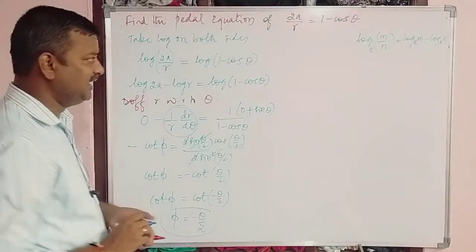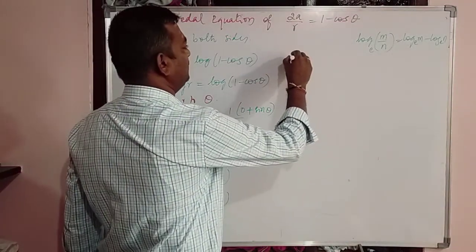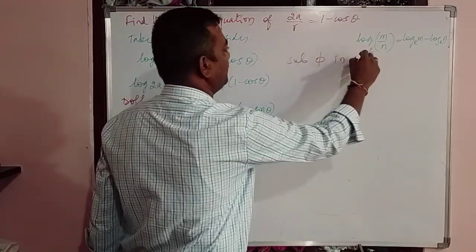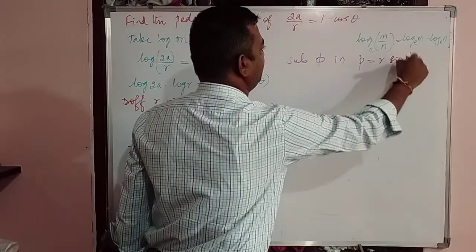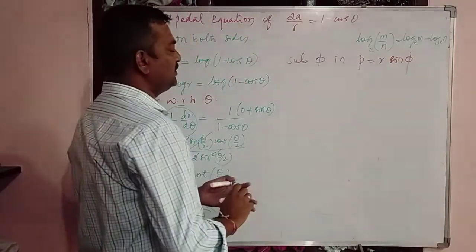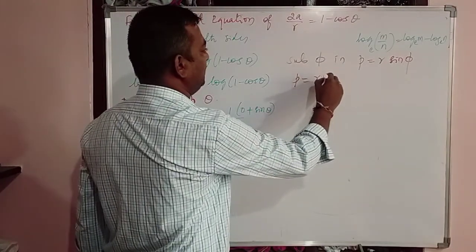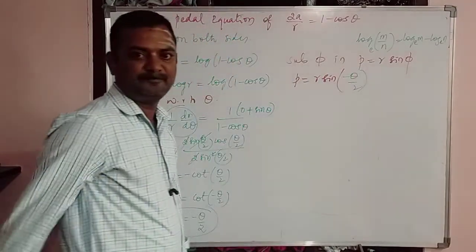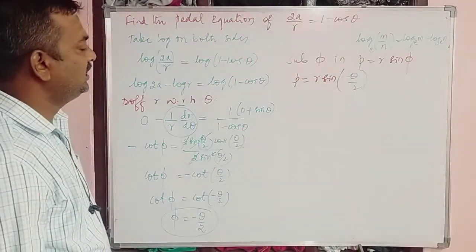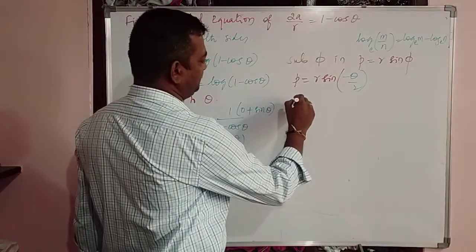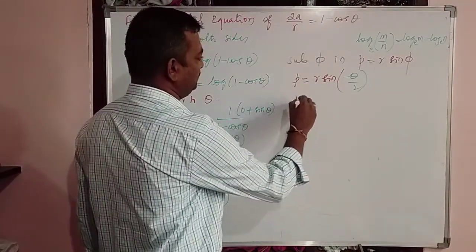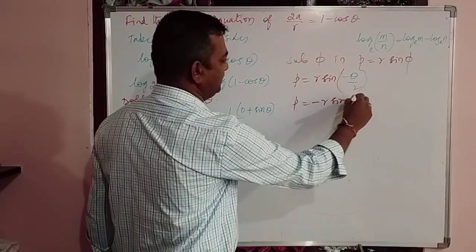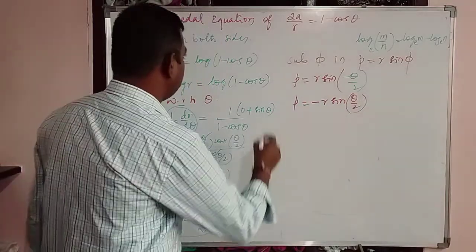Since we got φ explicitly, substitute into p = r·sin φ. So p = r·sin(−θ/2) = −r·sin(θ/2). Call this equation 2.